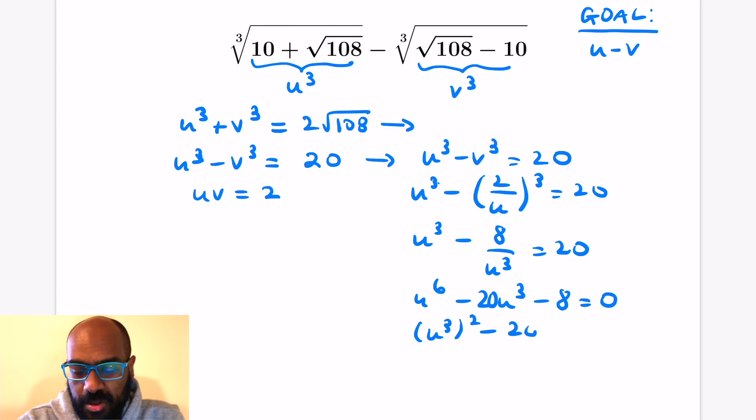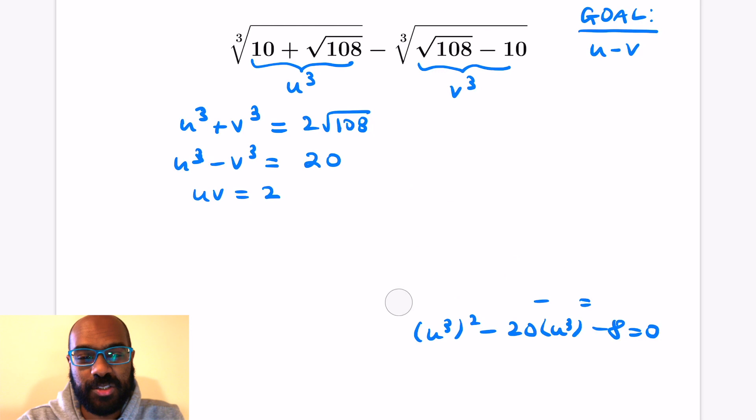If we write this quadratic down we could solve for what u cubed is, but then that would essentially give us the expression we already have for u cubed. That doesn't help us actually find out what u is to figure out what u minus v is. So we're going to do something else. There has to be some other way to figure out what u minus v is without going through this process. Let's take a look at this really interesting way to figure this out.